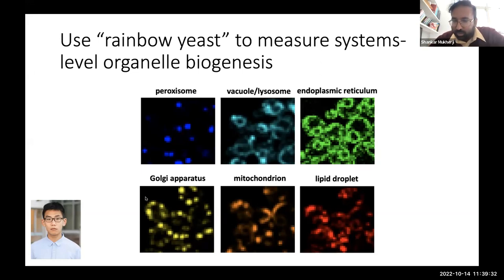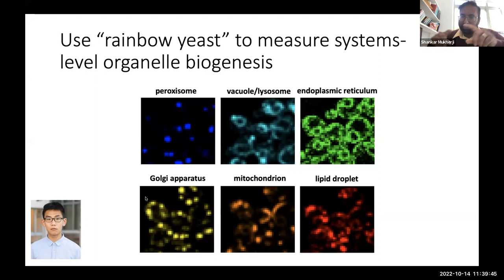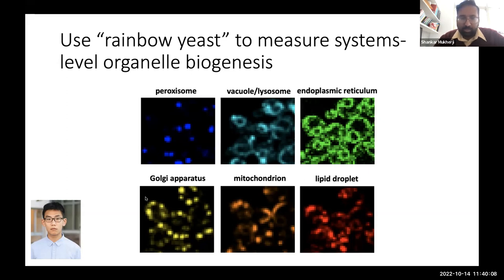For any organelle aficionados in the audience, some of these structures will look very familiar. For example, the endoplasmic reticulum in yeast has a dual-ring structure — part of the ER surrounds the nucleus and part surrounds the whole cell cortex. Mitochondria have tubules that exist throughout the cell. This hyperspectral imaging method really opens a new door to understanding these processes of systems-level organelle biogenesis.